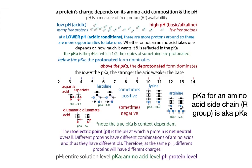The pKa's of the basic ones are higher than the pKa's of the acidic ones. If something is a better base, it's going to be a weaker acid, and a better acid is going to have a weaker conjugate base. The lower the pKa, the stronger the acid and the weaker the base. The higher the pKa, the stronger the base and the weaker the acid. Here I'm using the term pKa, but when it's in the context of a protein, we call it a pKr.